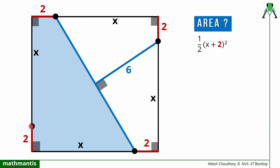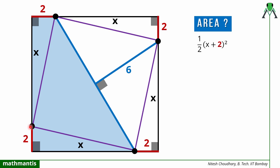Now I will join all four points and define a quadrilateral. This quadrilateral is also a square. To see why, look at the four corner triangles. All four triangles are congruent because two sides equal x and 2 respectively, and the included angle is 90 degrees. So all four sides of the inner quadrilateral, found by Pythagoras theorem, are equal. A quadrilateral with all four sides equal is either a rhombus or a square.